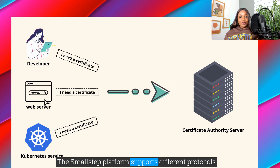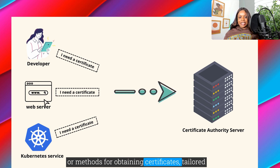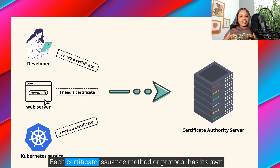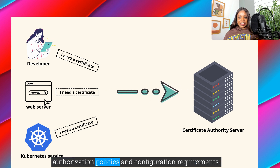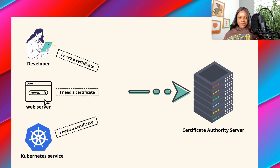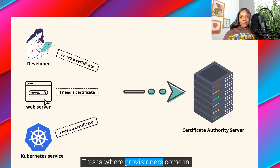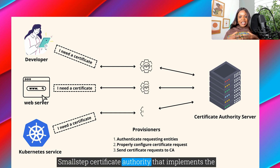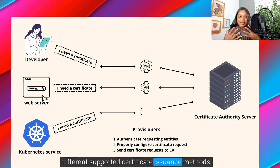The Small Step platform supports different protocols or methods for obtaining certificates, tailored for different workflows, entities, and endpoints. Each certificate issuance method or protocol has its own authorization policies and configuration requirements. And this is where provisioners come in. Think of provisioners as endpoints on the Small Step Certificate Authority that implement the different supported certificate issuance methods.